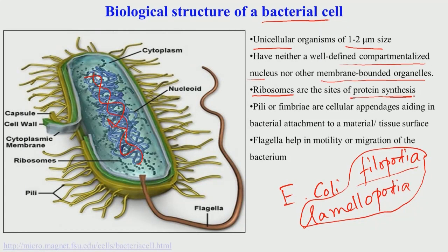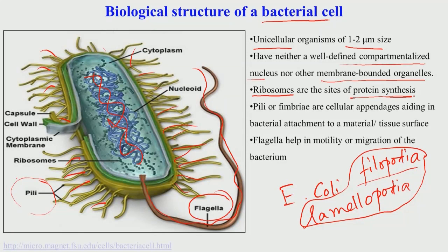In bacteria, there is a large tail-like structure known as the flagellum, and also small hair-like structures called pili, which appear as outgrowths from the bacterial cell wall or cell membrane. Pili and flagella help in bacterial attachment on a biomaterial substrate, while flagella — the longer tail-like structures — particularly help in motility or migration of the bacteria.